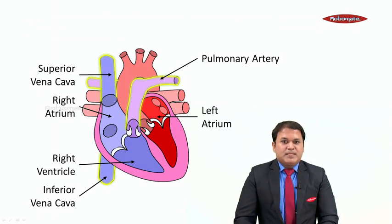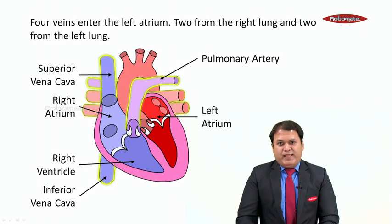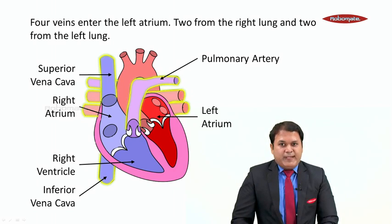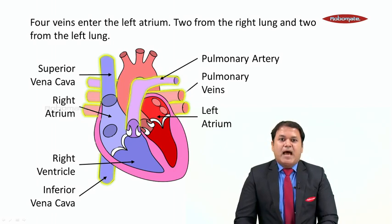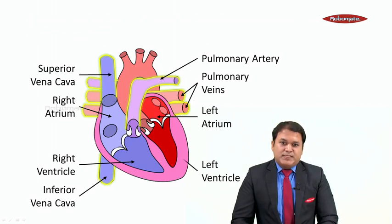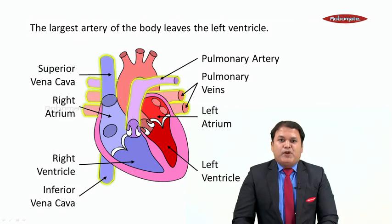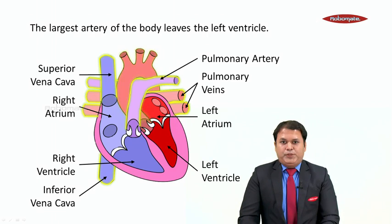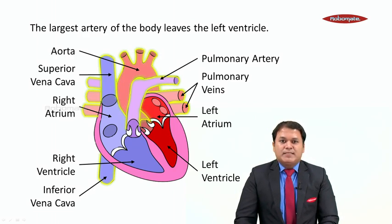Moving on to the left side — this is the left atrium. Four veins enter the left atrium: two from the right lung and two from the left lung. These four veins are called the pulmonary veins. And this is the left ventricle. The largest artery of the body leaves from the left ventricle, and this artery is called the aorta.